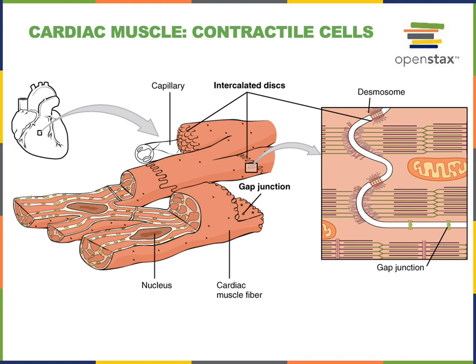Within these intercalated discs are cell junctions known as desmosomes and gap junctions. The desmosomes anchor the filaments of adjacent cytoskeletons together to prevent the cells from being pulled apart during contraction. The gap junctions connect the cytosol of adjacent cells, allowing ions to flow from one cell into the next, which allows the action potential to spread throughout cardiac muscle.